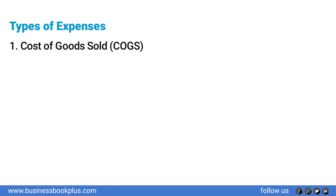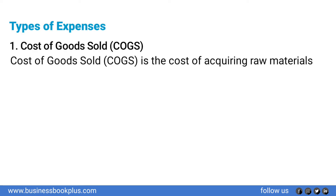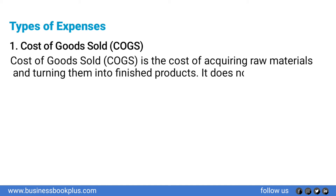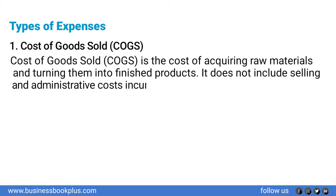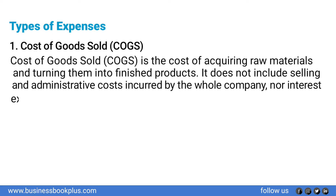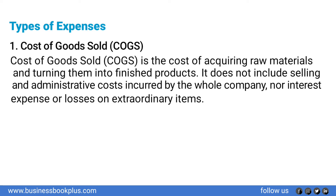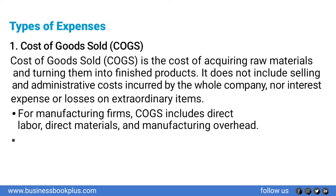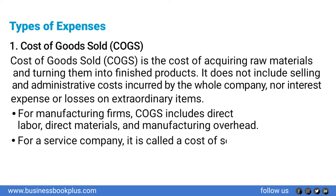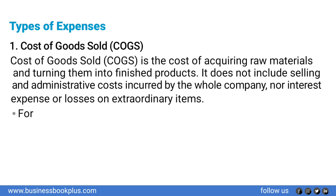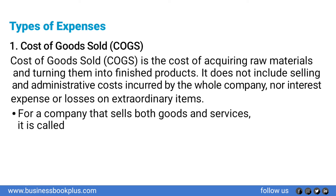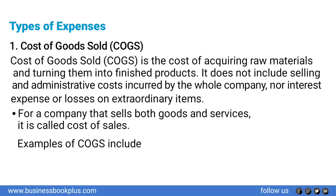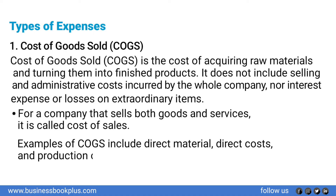Types of expenses — number one: Cost of Goods Sold (COGS) is the cost of acquiring raw materials and turning them into finished products. It does not include selling and administrative costs, interest expense, or losses on extraordinary items. For manufacturing firms, COGS includes direct labor, direct materials, and manufacturing overhead. For service companies it is called cost of services, and for companies selling both goods and services it is called cost of sales.